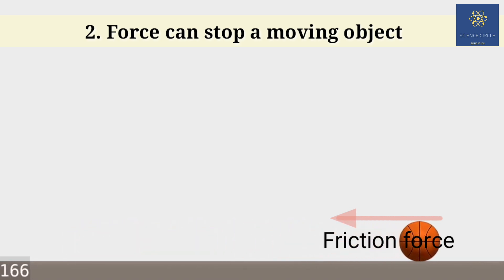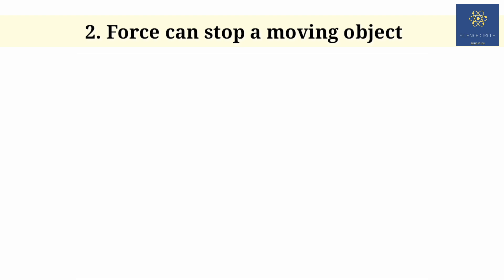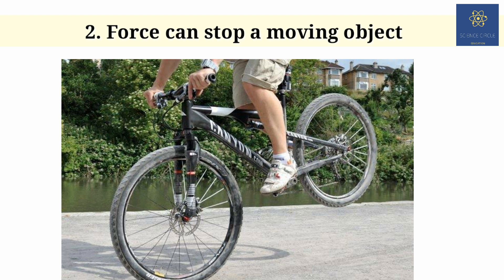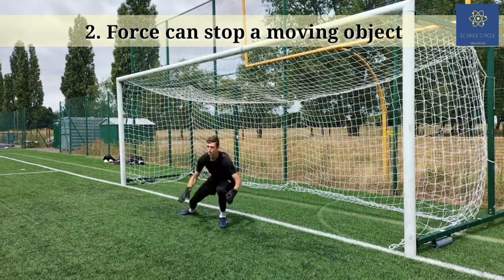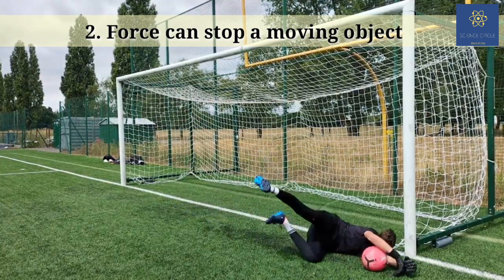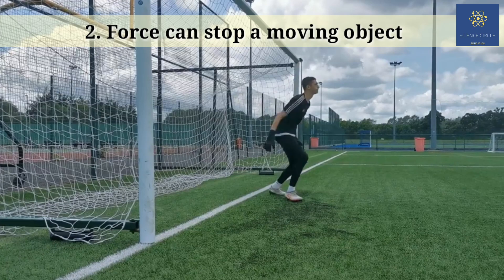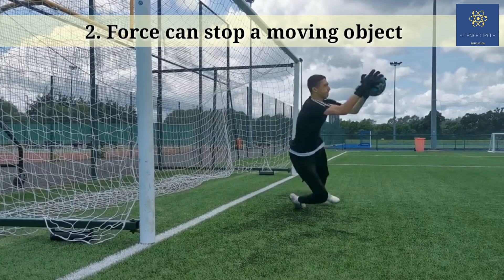Coming with the next one, force can stop a moving object or it can slow it down. When you lower the speed of your paddling, the cycle speed lowers down. If you put a brake, the speed of the cycle lowers down to zero. Similarly, in a football match when a goalkeeper jumps to save the goal, he applies force to the moving football with his hands.